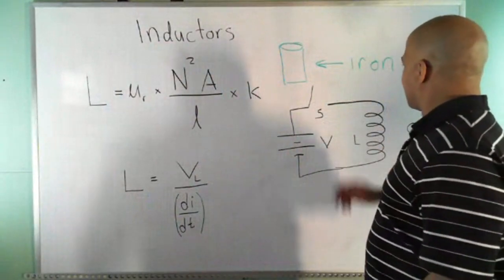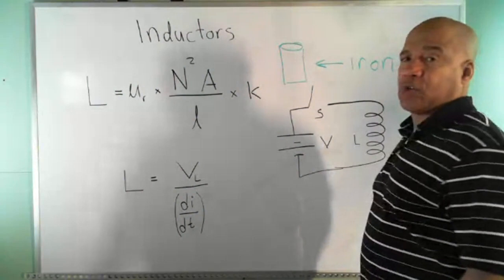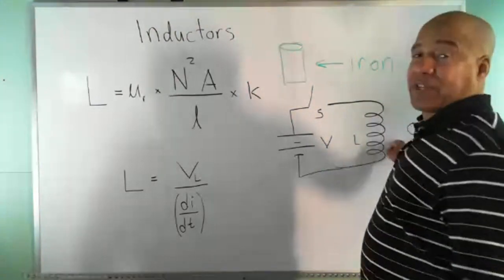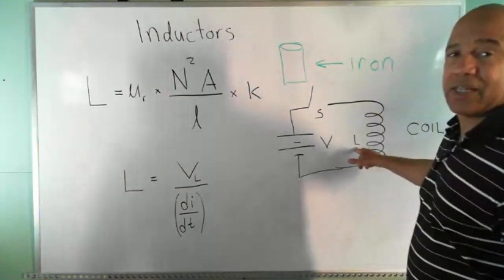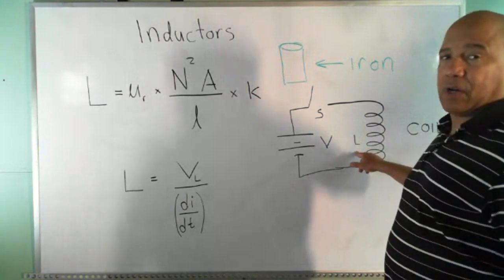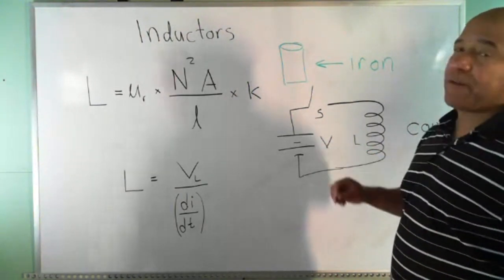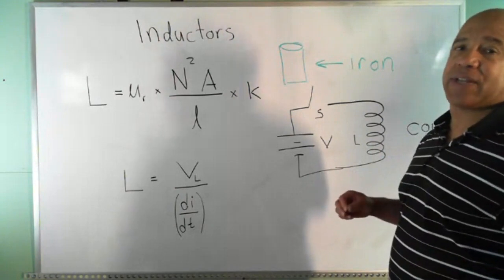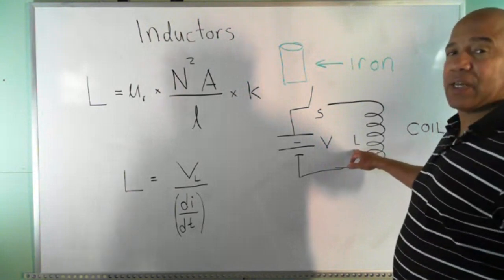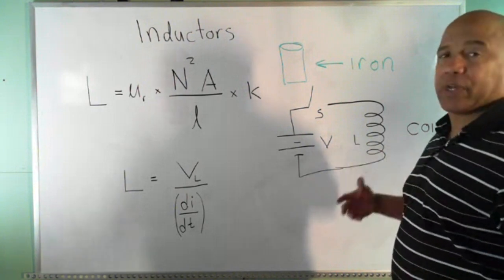The symbol we use for an inductor is a coil. The letter representing inductance is L — not I, because we already use I for current. Just as C represents capacitance with the unit of farads, L represents inductance and the unit of inductance is the Henry. So we express inductance as so many Henrys.